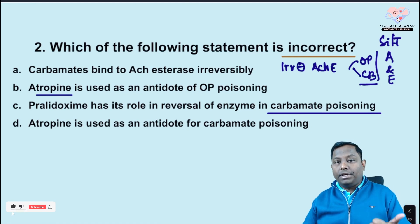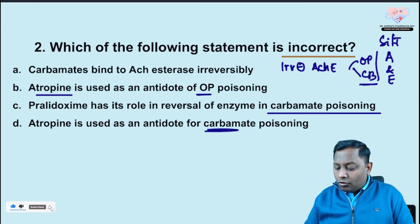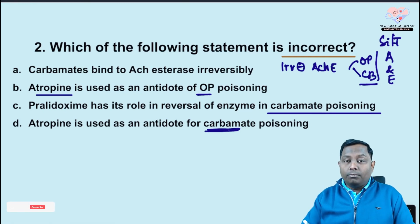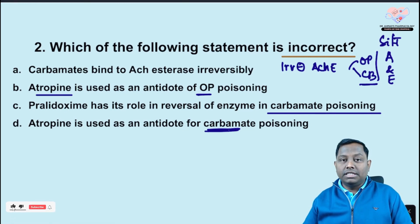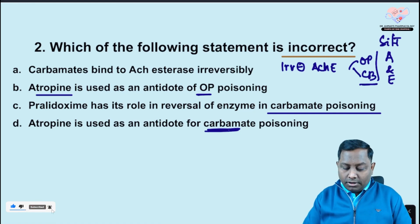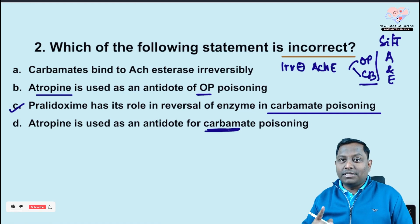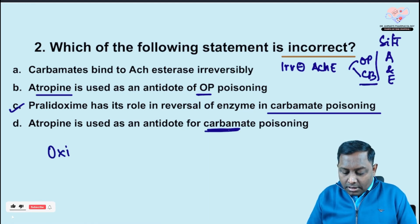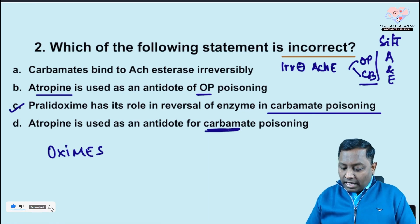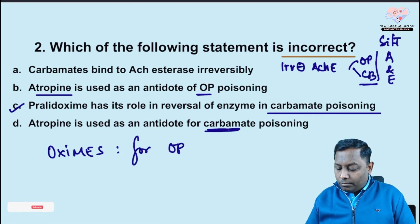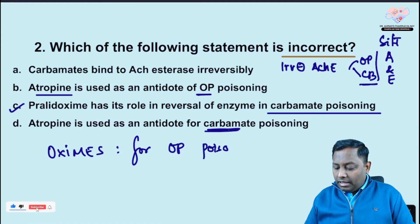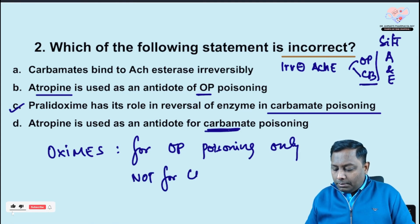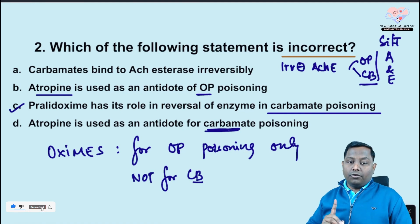Now, pralidoxime is said to have a role in reversal of carbamide poisoning — let's evaluate this. Pralidoxime belongs to the oximes group. Oximes are only effective for organophosphate poisoning; they are NOT effective for carbamide poisoning. So the incorrect statement is that pralidoxime has a role in reversal of carbamide poisoning.